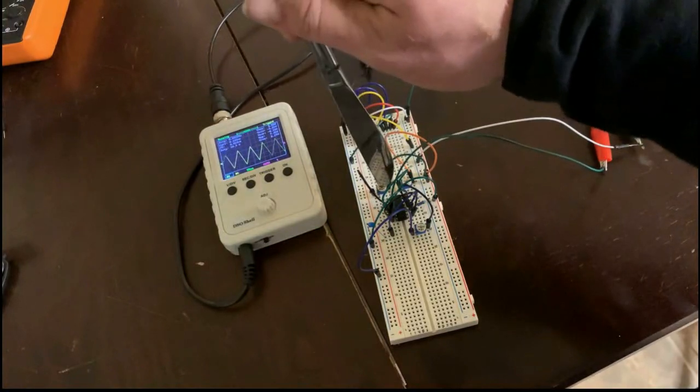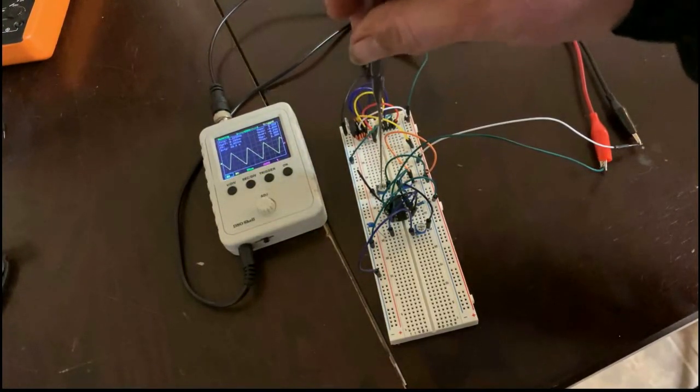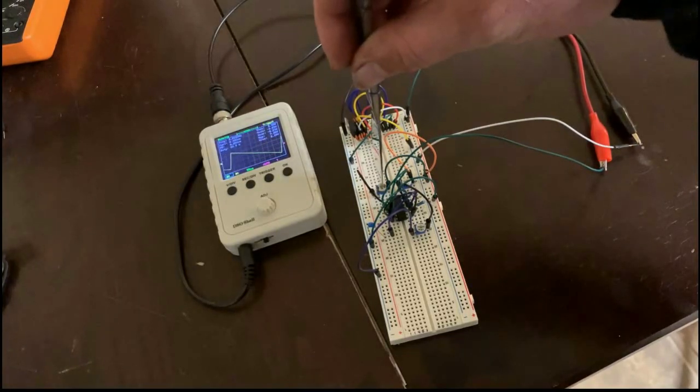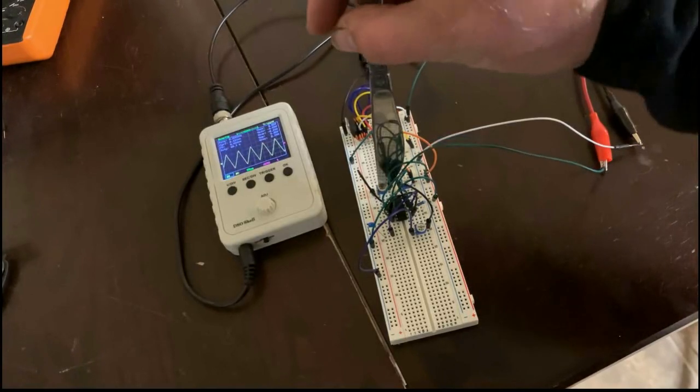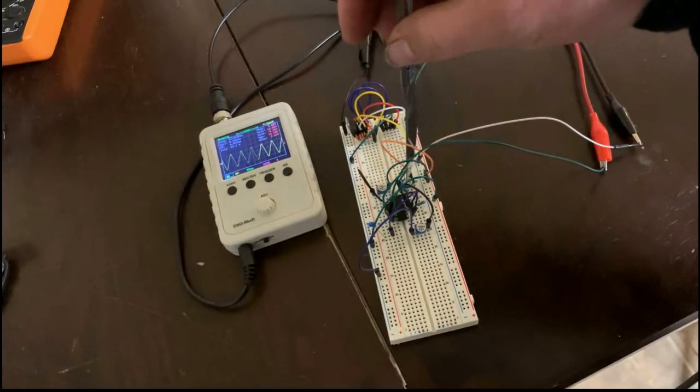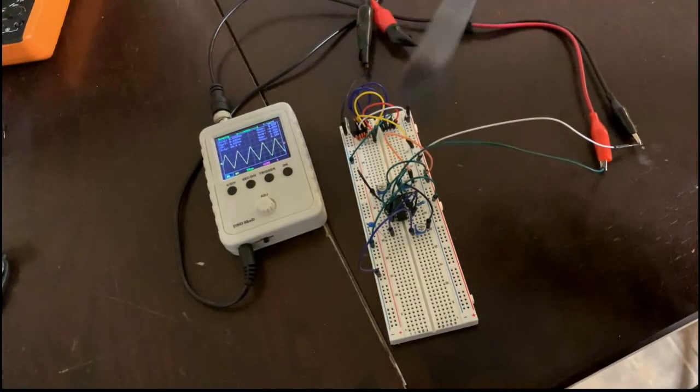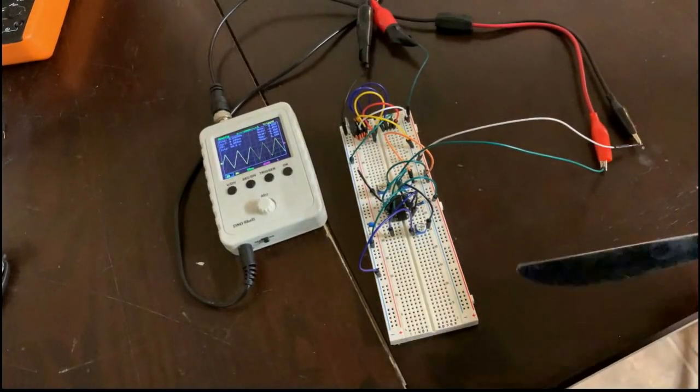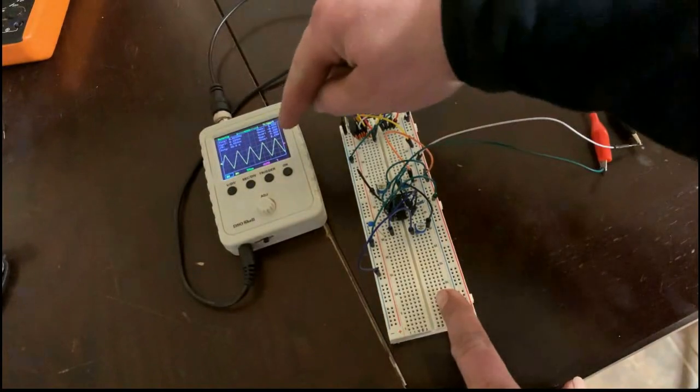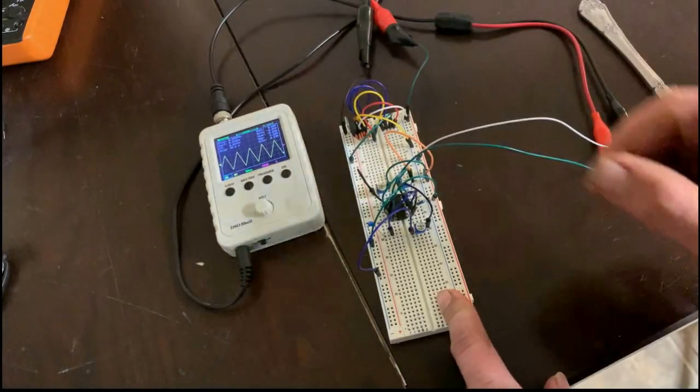So, we'll go ahead and take a look at the triangle wave on pin three. There it is. So, you can make a ramp wave by turning this resistor down. And then you can make an in-ramp wave by turning this other resistor down. They also call them sawtooth waves.